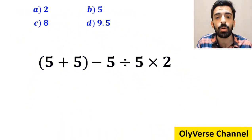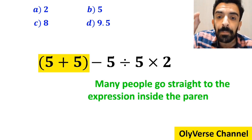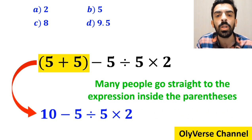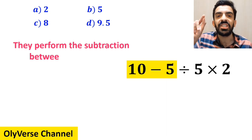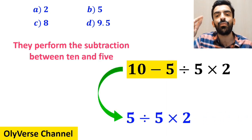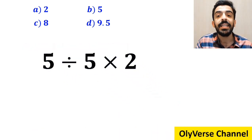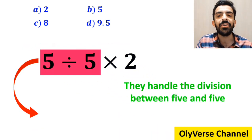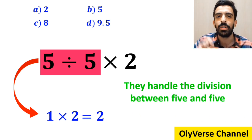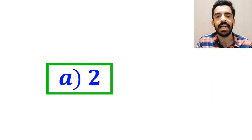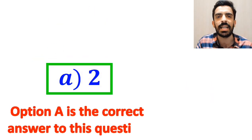In the first step of solving this question, many people go straight to the expression inside the parenthesis and simplify the whole expression to 10 minus 5 divided by 5 times 2. In the next step, they perform the subtraction between 10 and 5, simplifying to 5 divided by 5 times 2. In the final step, they handle the division and write this as 1 multiplied by 2, which gives them the answer 2. Without any hesitation, they quickly say that option A is the correct answer. However, this answer is absolutely wrong.